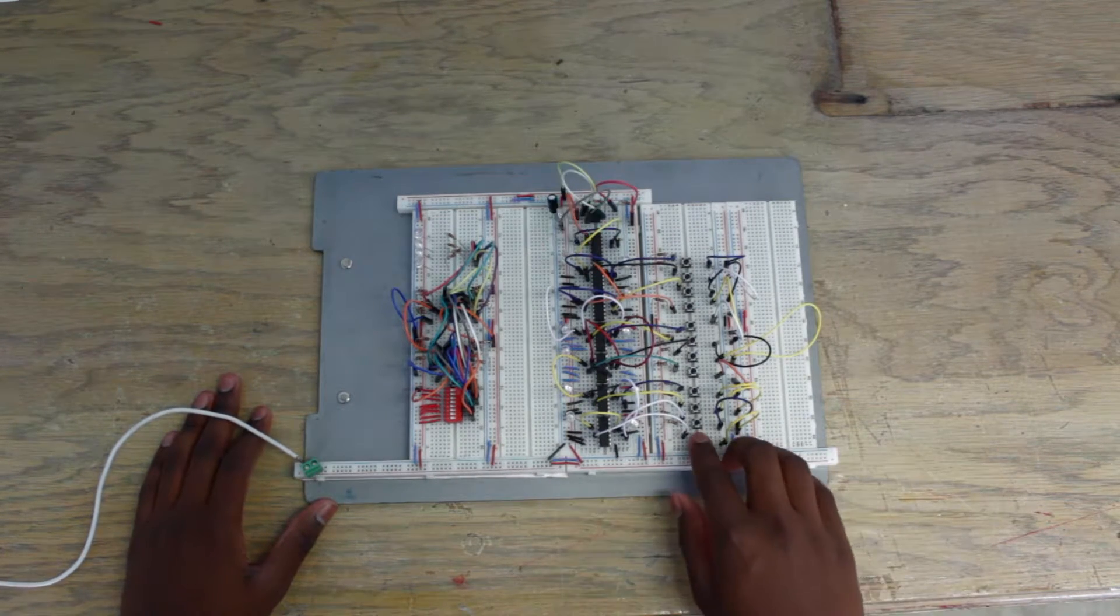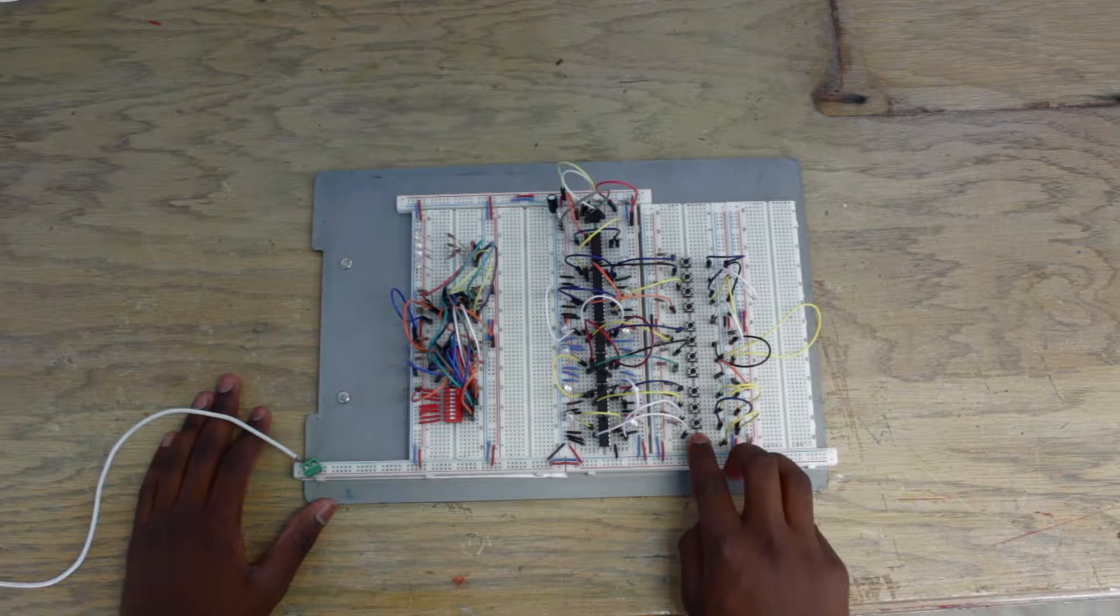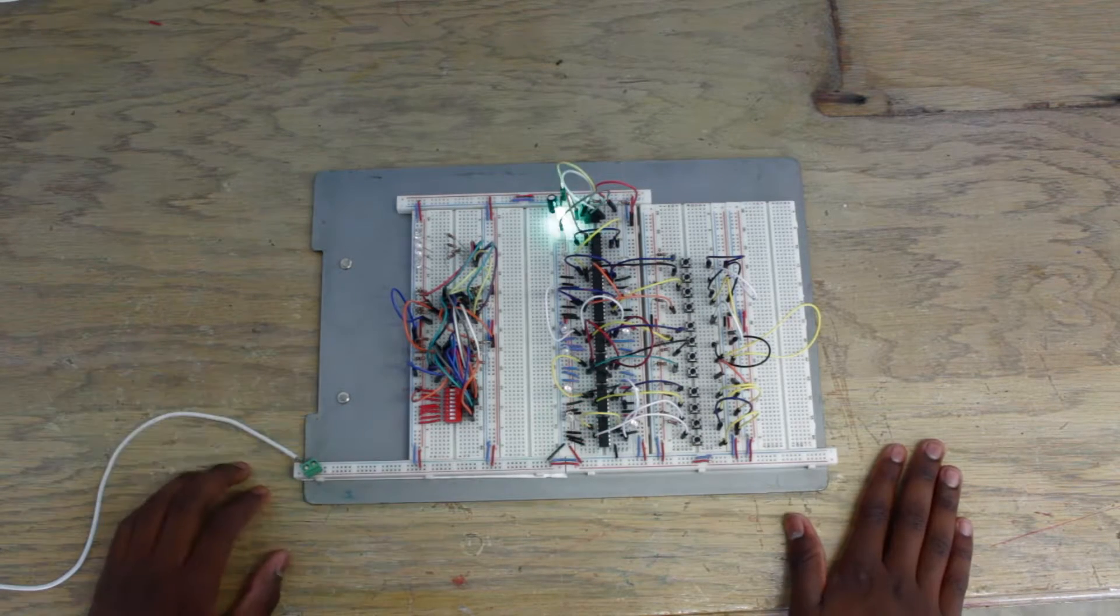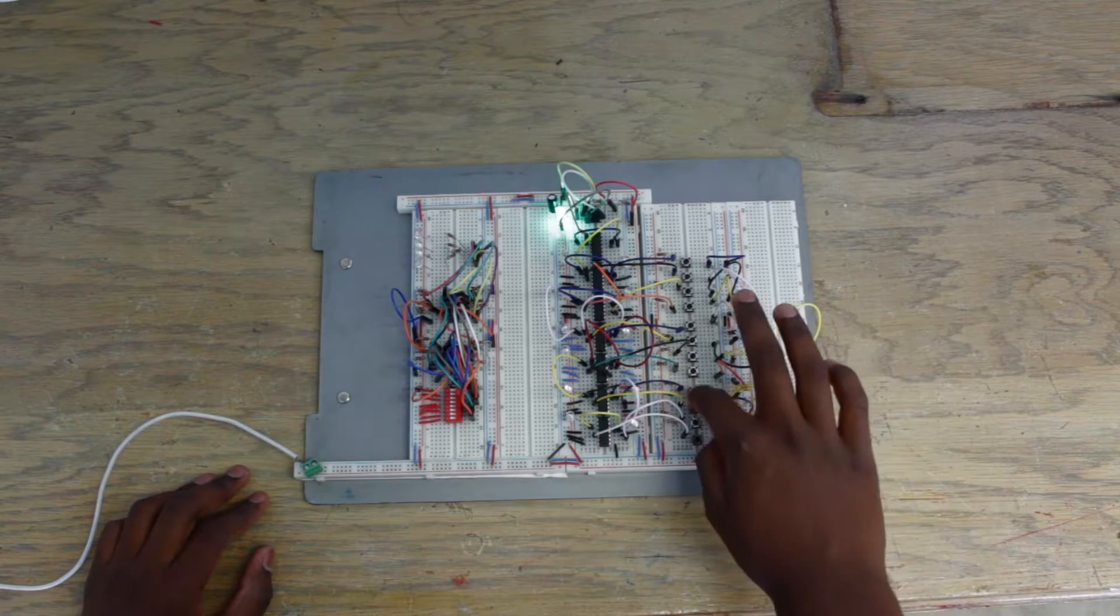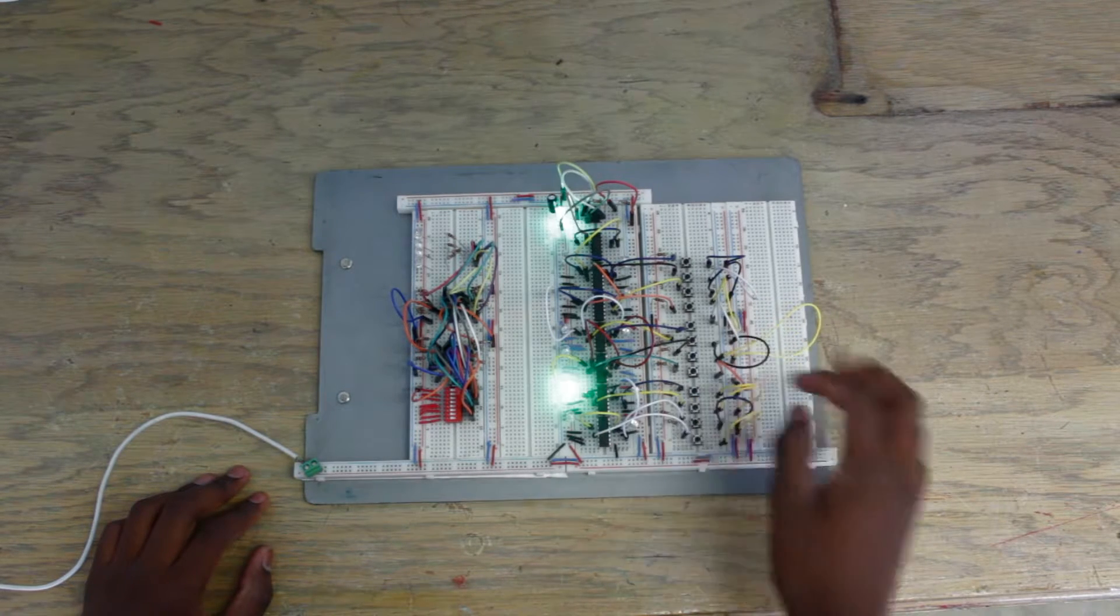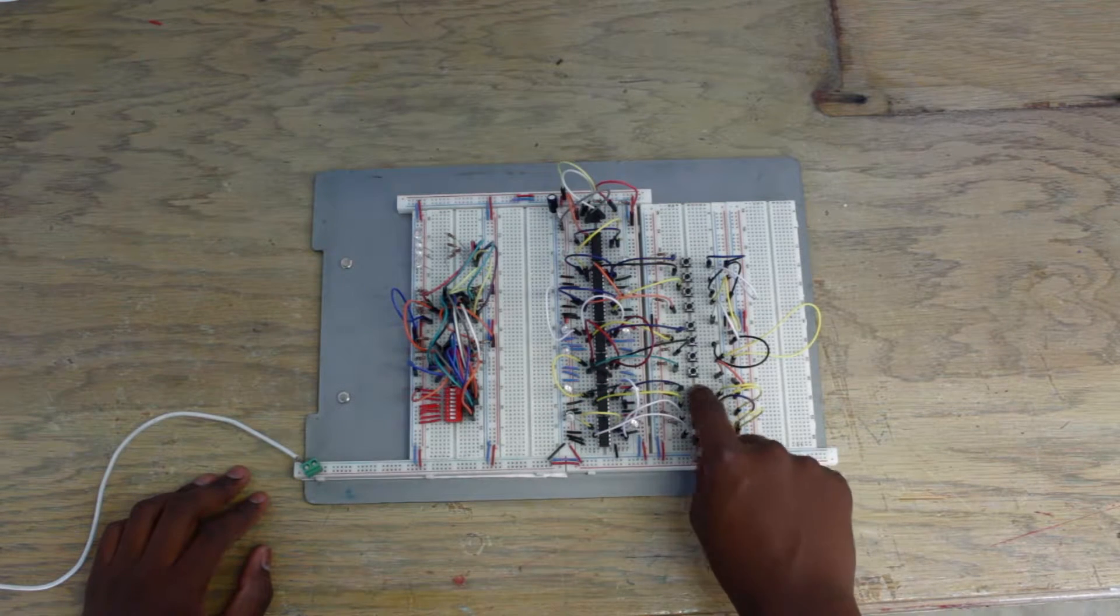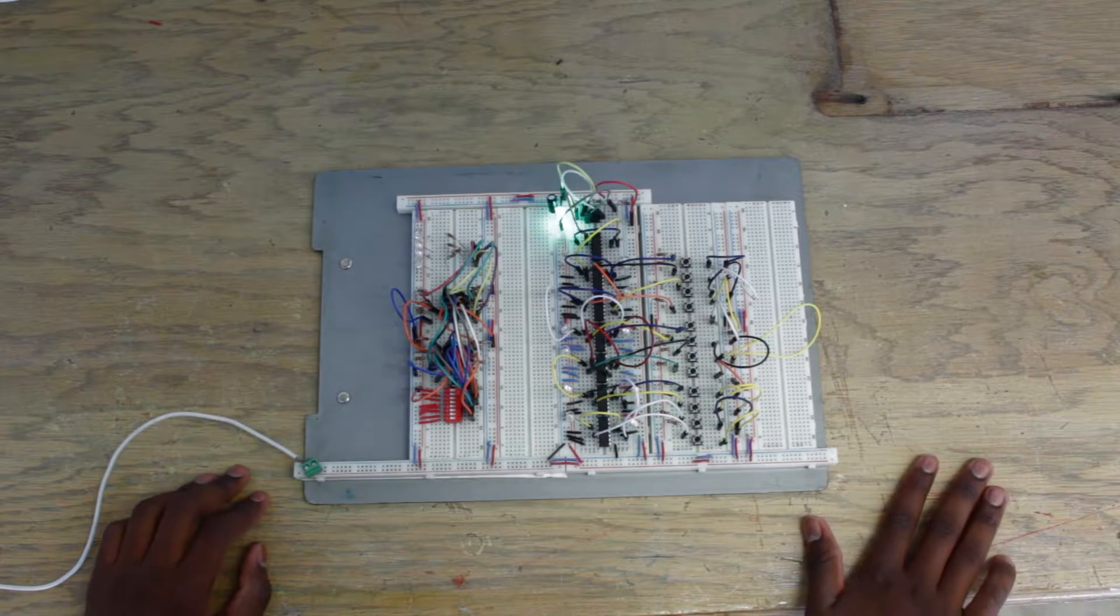So, first bit. It stays for 1 clock cycle. This is the second bit. It stays for 1 clock cycle. Third bit. It stays for 1 clock cycle. Fourth bit. It stays for 1 clock cycle.